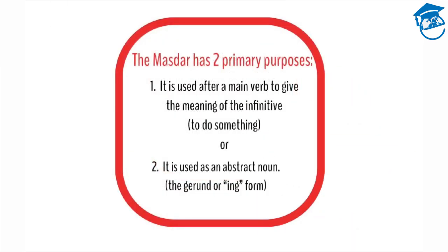The masdar has two primary purposes. First, it's used after a main verb to give the meaning of the infinitive — to do something. Or two, it's used as an abstract noun. In this case, it could be translated as the gerund or the -ing form of the word, like traveling or driving.